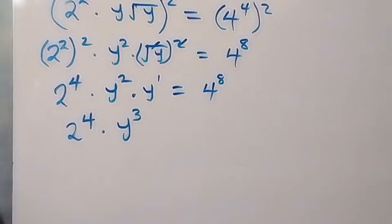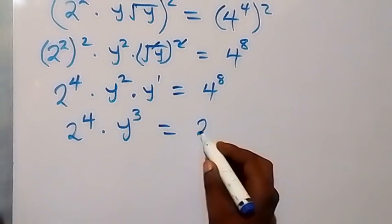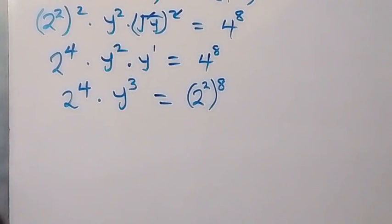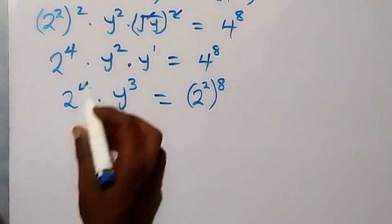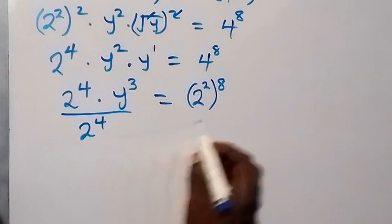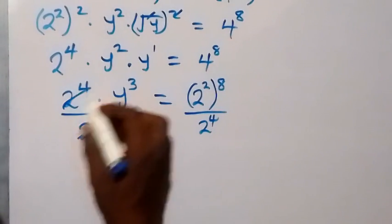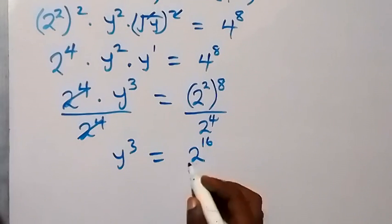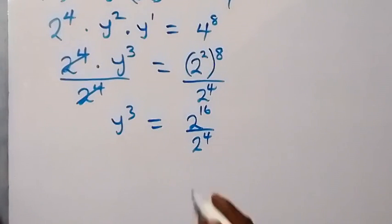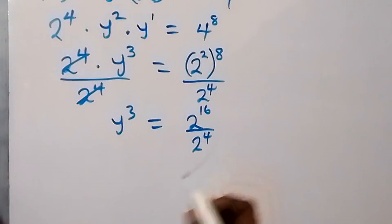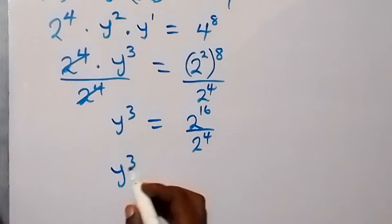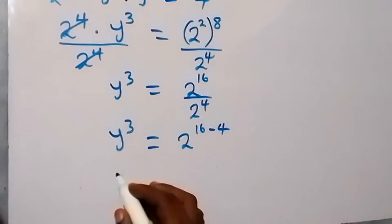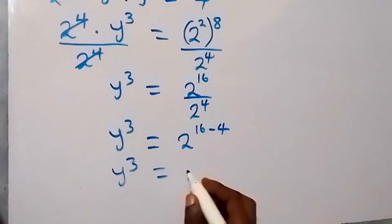That will be 2 plus 1, that's 3, which equals to 2 raised to power 2, that's 4, then raised to power 8. In the next step you can divide both sides by 2 raised to power 4 so as to remove this on this side. 2 raised to power 4 divided by 2 raised to power 4 cancels out, and we have y raised to power 3 equals to 2 raised to power 16 over 2 raised to power 4. Since the same base divides, we subtract the powers and we have y raised to power 3 equals to 2 raised to power 16 minus 4, which gives y³ equals to 2 raised to power 12.